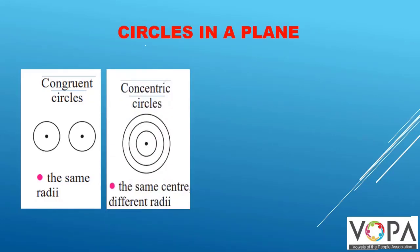Concentric circles. Two or more circles are said to be concentric if they have the same center but different radii.